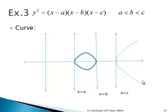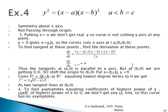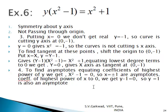The next example is the case where b = c, giving y² = (x − a)(x − b)². The curve is again symmetric about the x-axis and does not pass through the origin. There are two x-intercepts, (a, 0) and (b, 0), and no y-intercept.